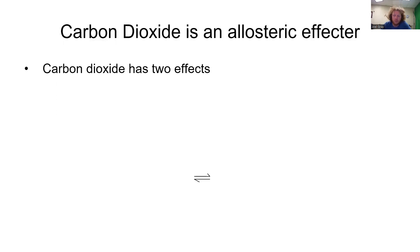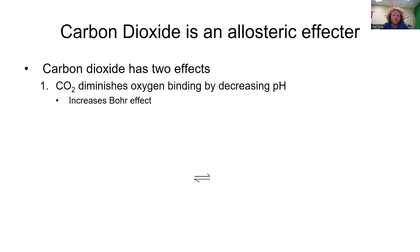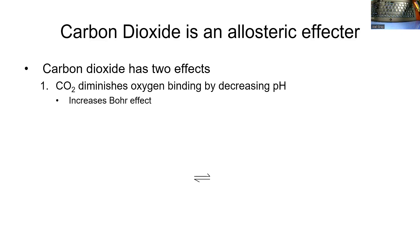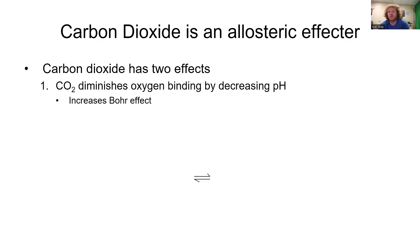One: carbon dioxide diminishes oxygen binding by decreasing pH — making a more acidic environment. So that increases or enhances the Bohr effect.